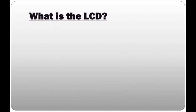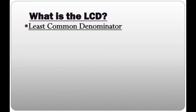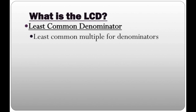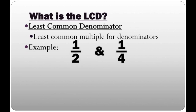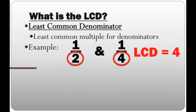So what is the LCD? The LCD stands for least common denominator, and all the least common denominator is, is the least common multiple for denominators. Let's take an example: 1/2 plus 1/4. In one half, our denominator is 2. In one fourth, our denominator is 4. So what's the least common multiple for 2 and 4? Since the least common multiple is 4, the LCD would be 4.